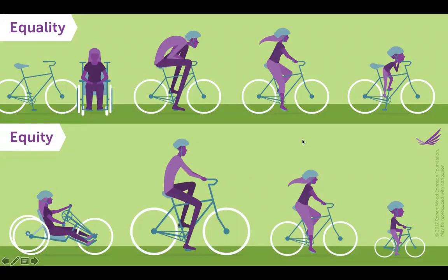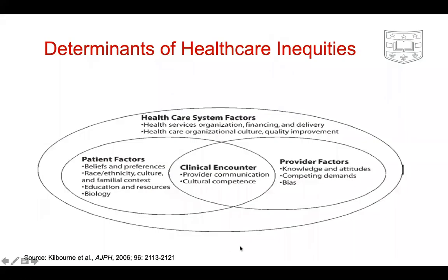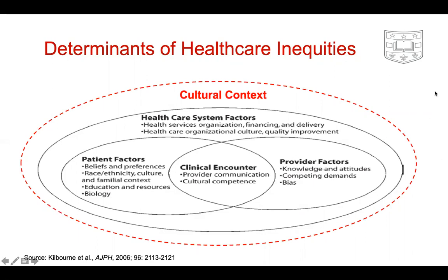Two other important definitions are the distinction between equality and equity. Equality is giving exactly the same thing to everyone regardless of their need — say, delivering intervention A to everyone in your study. Equity, on the other hand, is tailoring what you give to the specific need of the population. The problem is that inequities in healthcare delivery are complex. You have factors at the clinical encounter, the patient, the provider, and healthcare delivery — all permeated by cultural context, racism, discrimination, and a long history of factors.